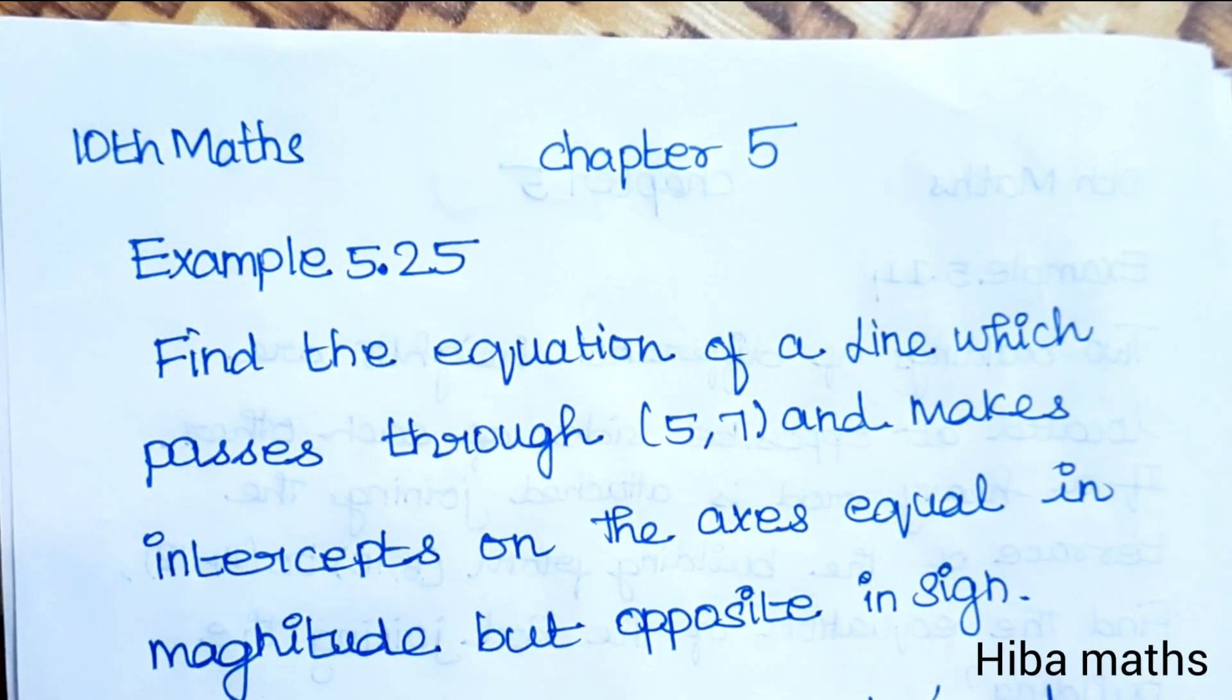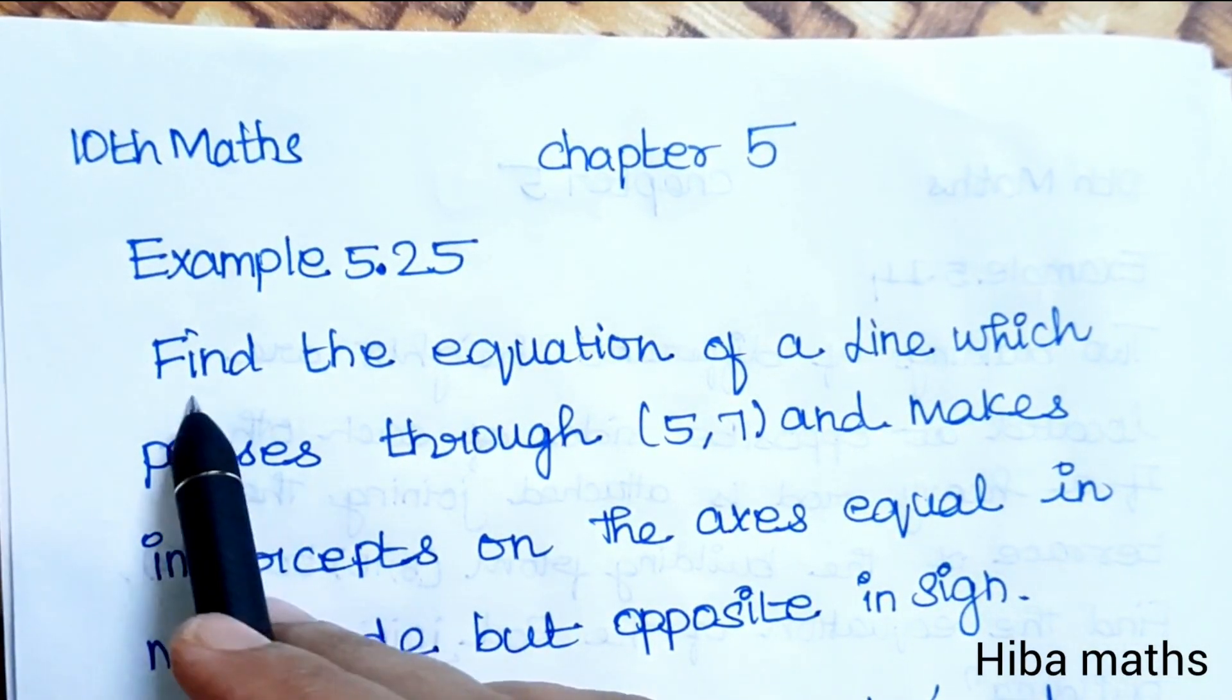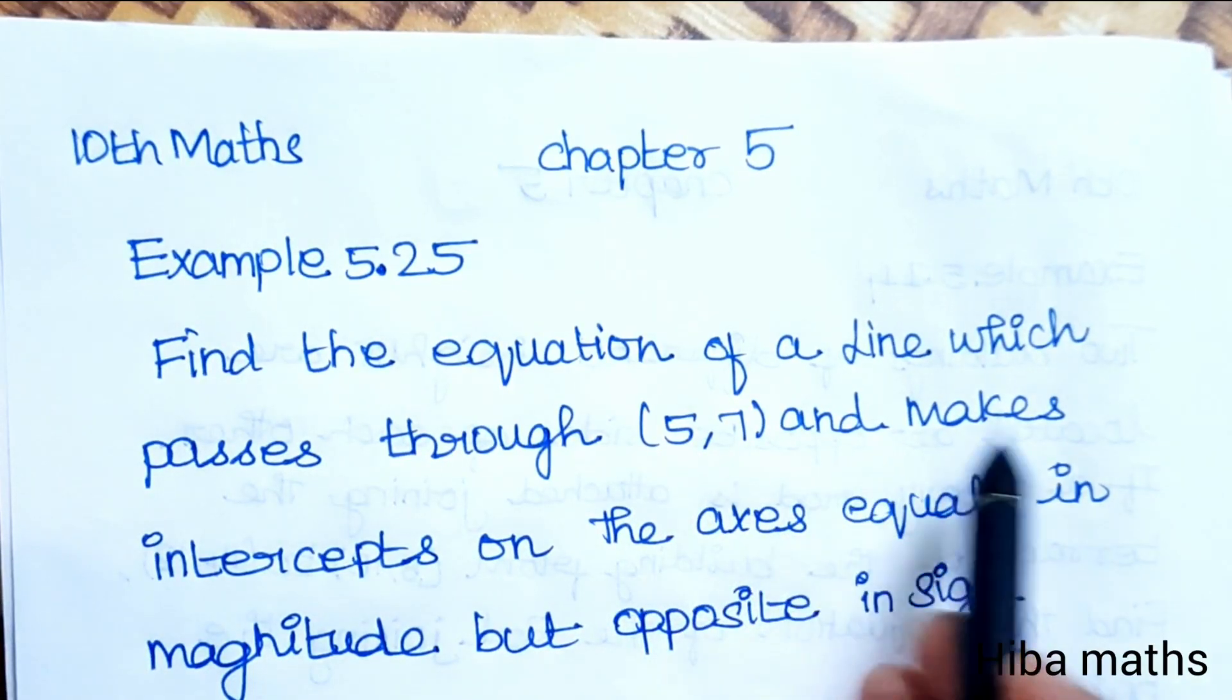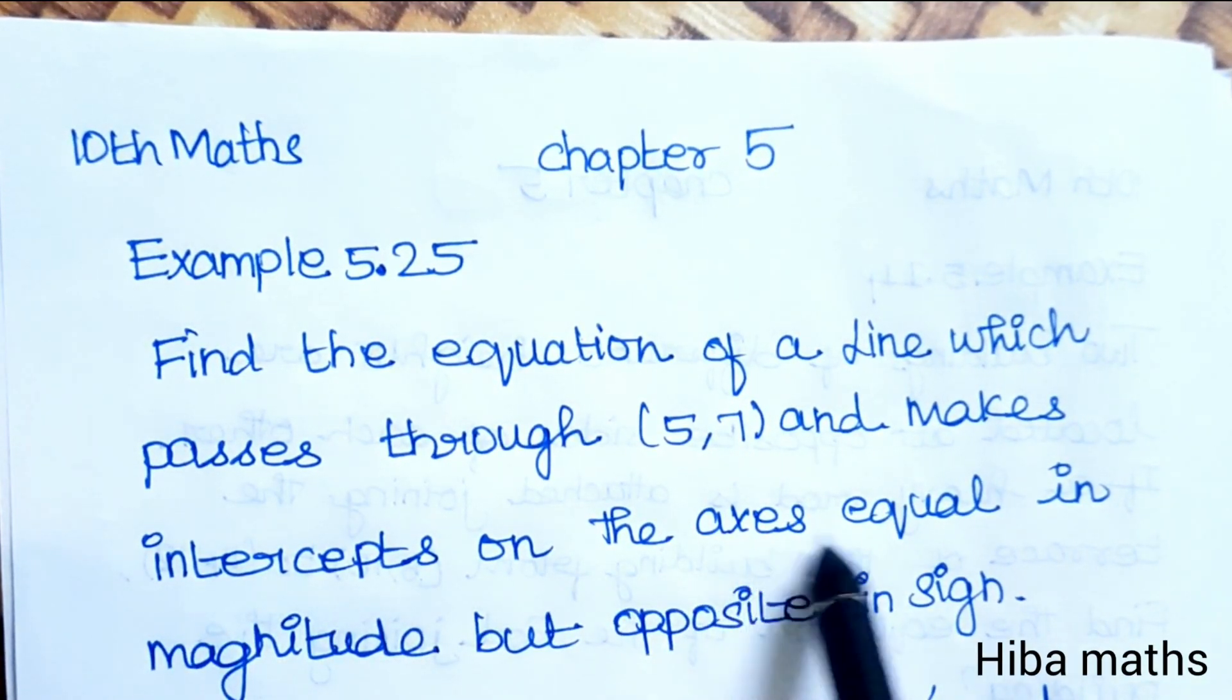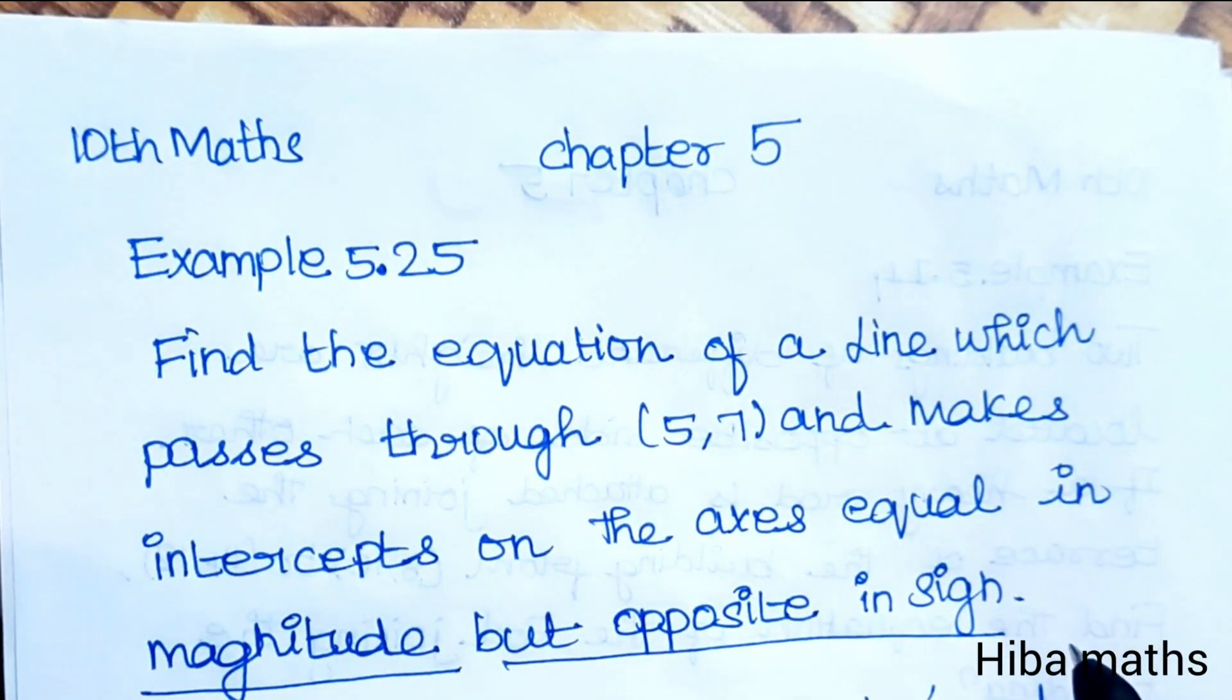Hello students, welcome to Hiba Maths, 10th standard maths, chapter 5, example 5.25. Find the equation of a line which passes through (5,7) and makes intercepts on the axes equal in magnitude but opposite in sign.